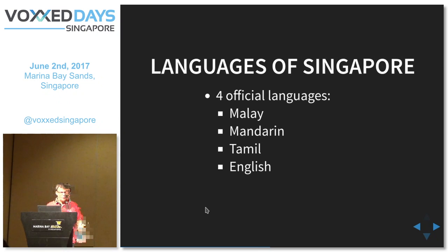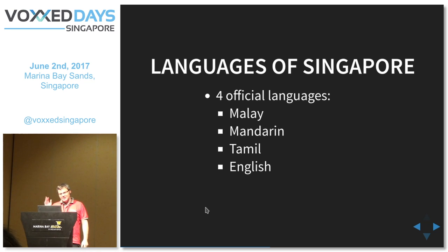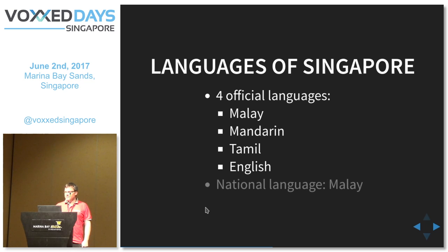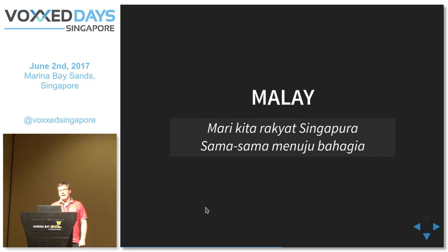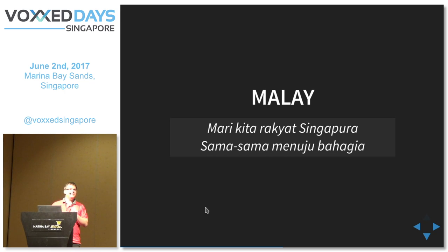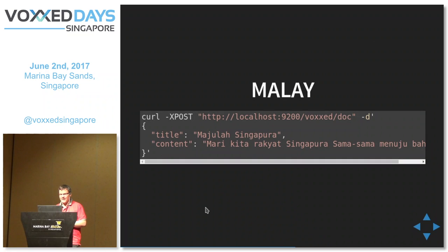Moving on to the languages themselves. Everybody knows there are four official languages in Singapore: Malay, Mandarin, Tamil and English. The national language of Singapore is Malay, which is also why the national anthem is in Malay — those are the first two lines of the anthem. We can just take this Malay text and push it to Elasticsearch, exactly like we did with the text before, and of course that will work as well.